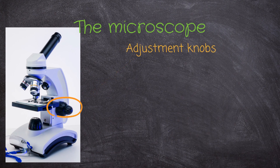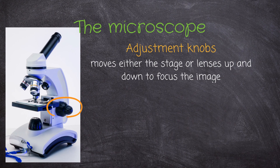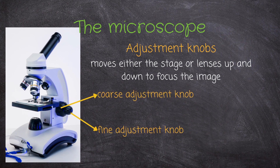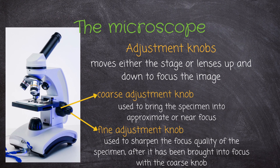At the bottom of the microscope we find the base, also known as the foot, which keeps the microscope steady. Then we have the adjustment knobs, which move the stage or lens up and down to focus the image. There are two types: the coarse adjustment knob, used to bring the specimen into approximate focus, and the fine adjustment knob, used to sharpen the focus after the coarse knob has been used.